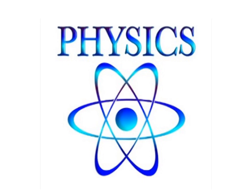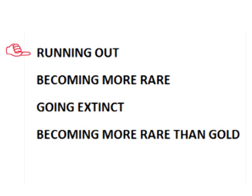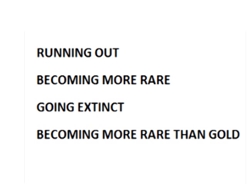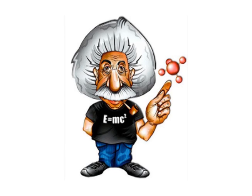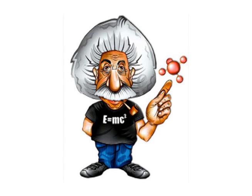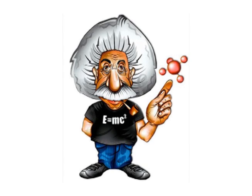No element can ever run out or go extinct. It is a scientific impossibility. This fact seems to be lost by many in the silver community who make claims of silver running out, becoming more rare, going extinct, becoming more rare than gold, or any other claim that attempts to defy the laws of physics. The Earth contains the same amount of silver now as when the Earth was created, and that amount does not increase or decrease in any way.